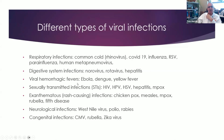Then there are viral hemorrhagic fevers like Ebola, which is probably the most famous, and dengue, which has been mostly in the southern hemisphere but as climate change takes hold we may start seeing dengue creep north. Yellow fever is present in countries in Africa and South America. There are also lots of viral sexually transmitted infections — HIV obviously, human papillomavirus which is the cause of cervical and anal cancer and genital warts, herpes simplex virus, and hepatitis can be sexually transmitted.